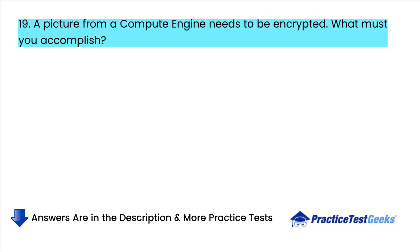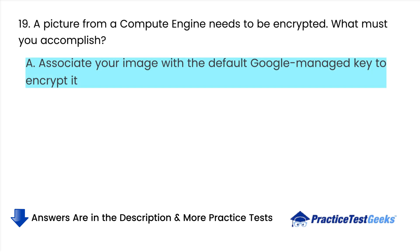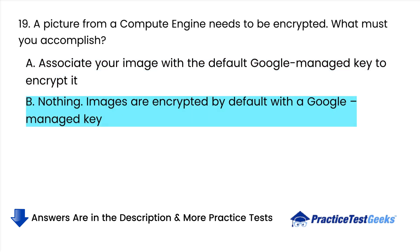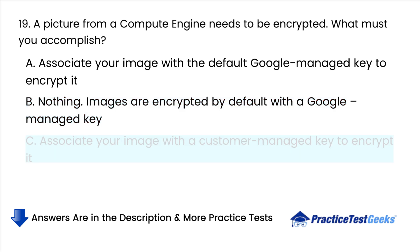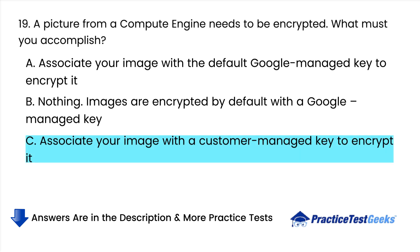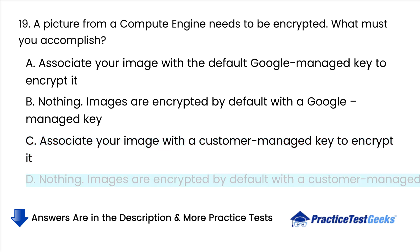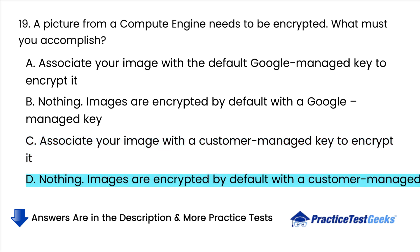A picture from a Compute Engine needs to be encrypted. What must you accomplish? A. Associate your image with the default Google-managed key to encrypt it. B. Nothing — images are encrypted by default with a Google-managed key. C. Associate your image with a customer-managed key to encrypt it. D. Nothing — images are encrypted by default with a customer-managed key.